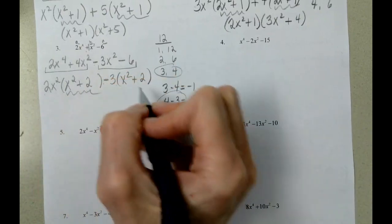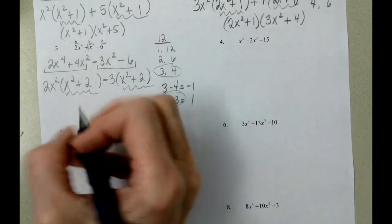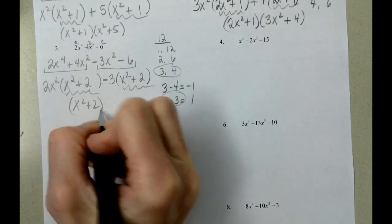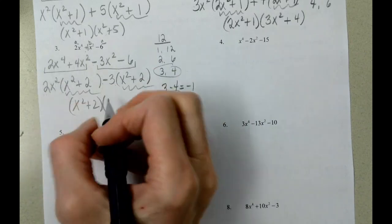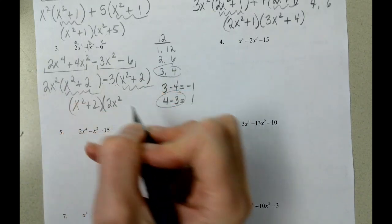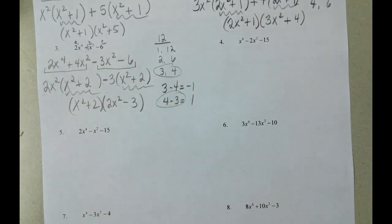And then what we've got? x squared plus 2 and x squared plus 2. And then our other group is what's not in common. The 2x squared from the first group and the minus 3 from the second group.